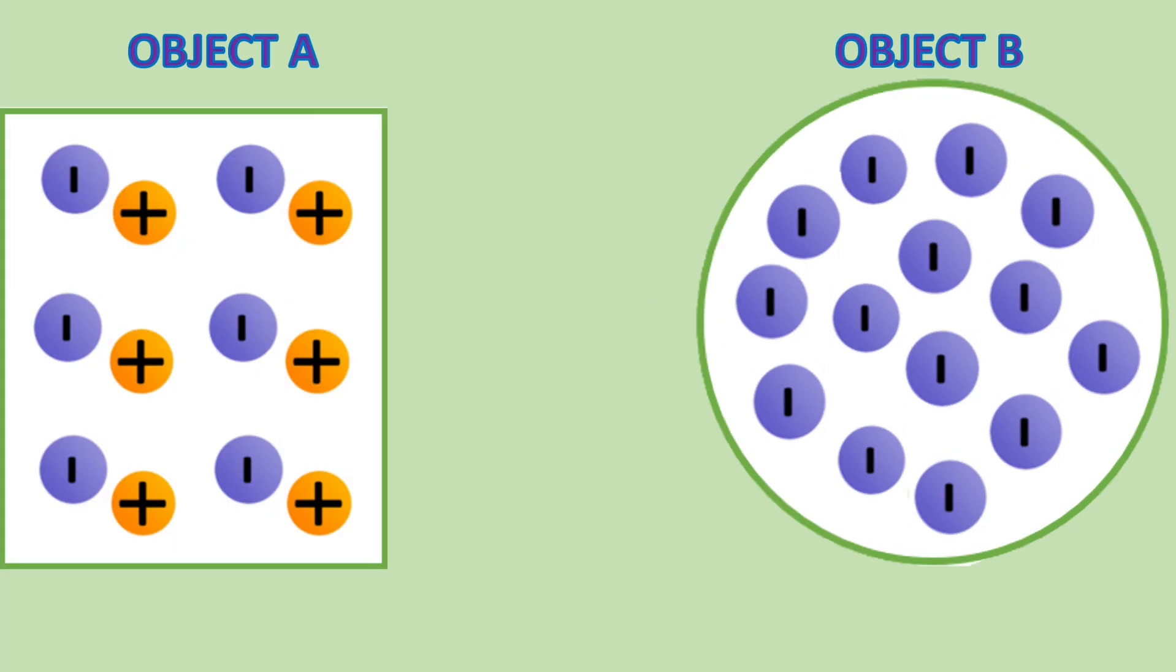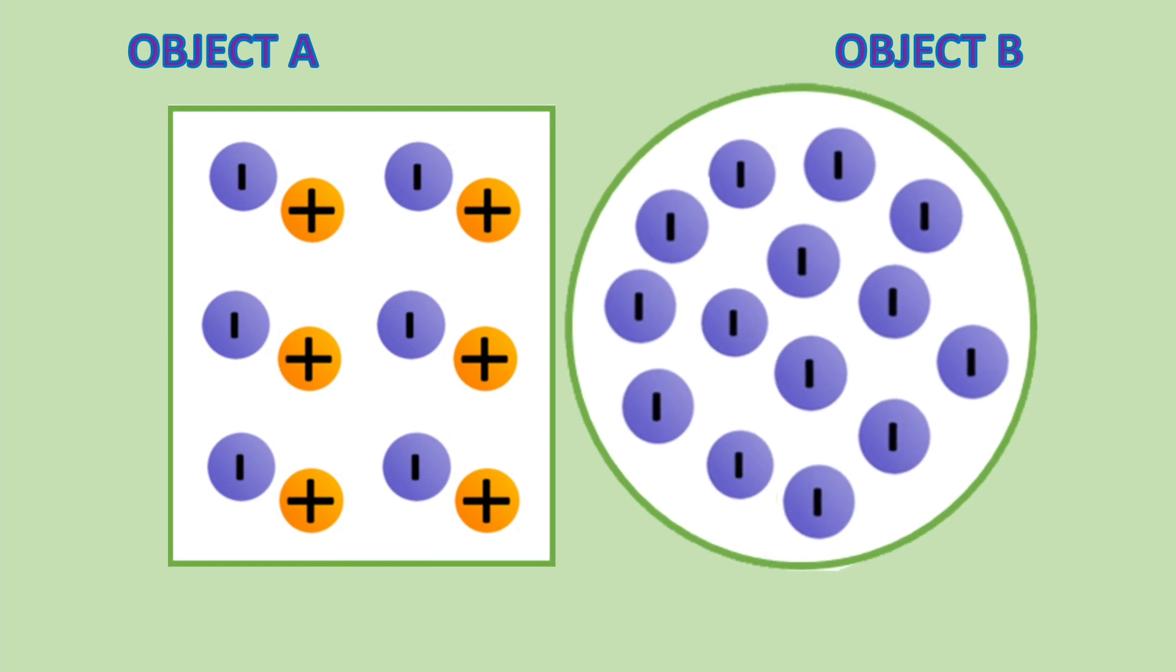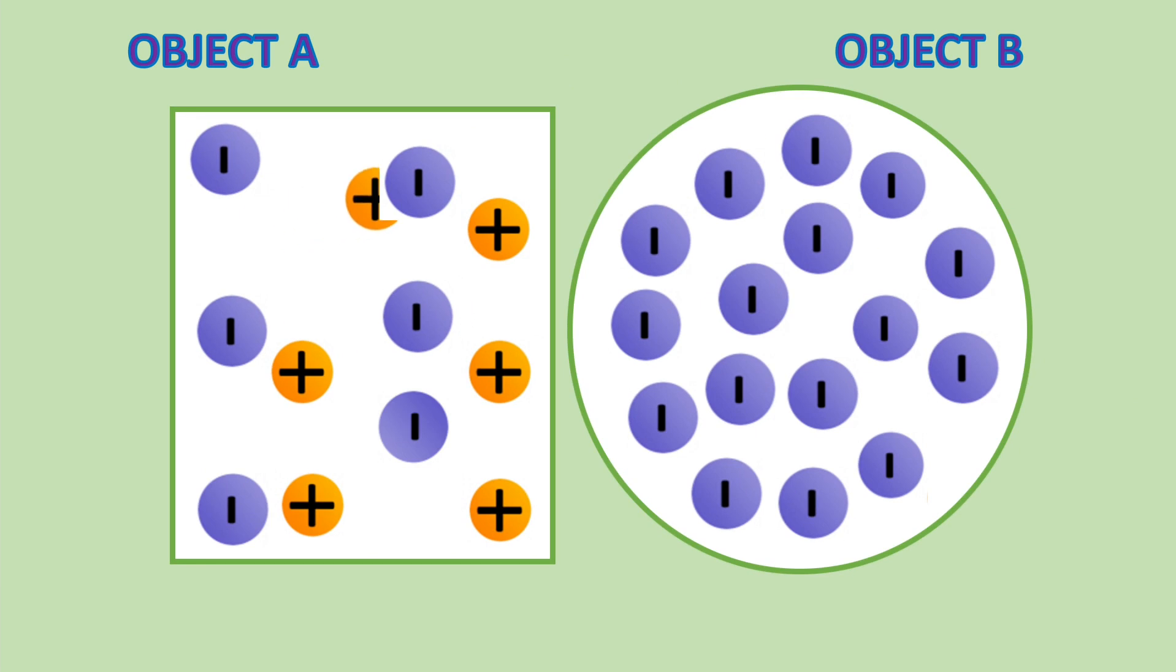Object A and B are now brought closer to each other without making any contact. We notice the positive charges from object A will move towards object B because there will be a force of attraction between the positive and negative charges.